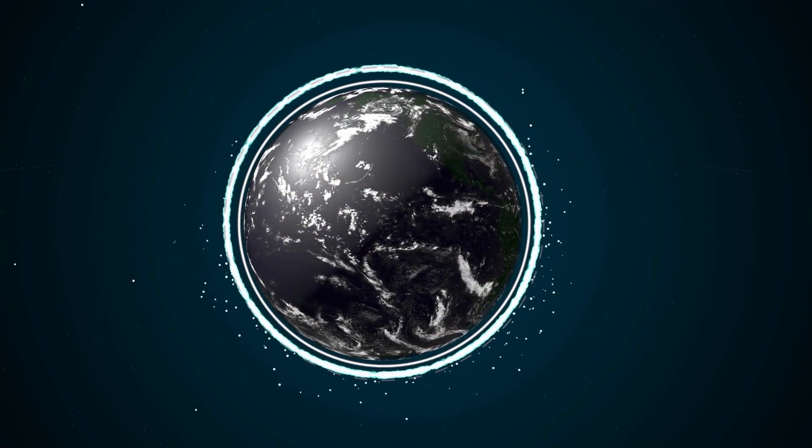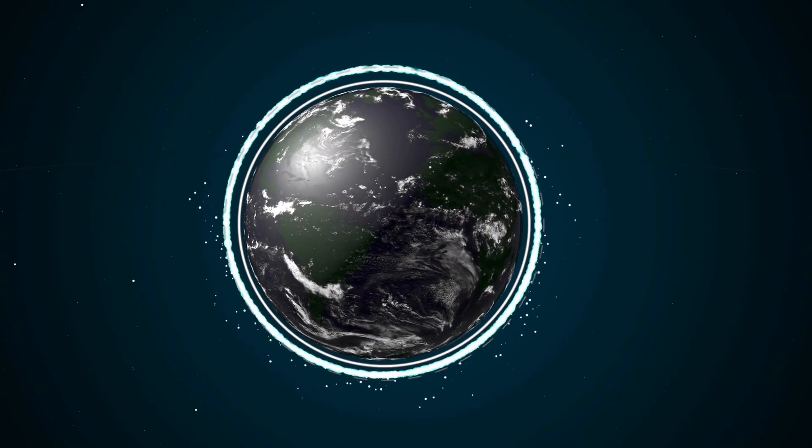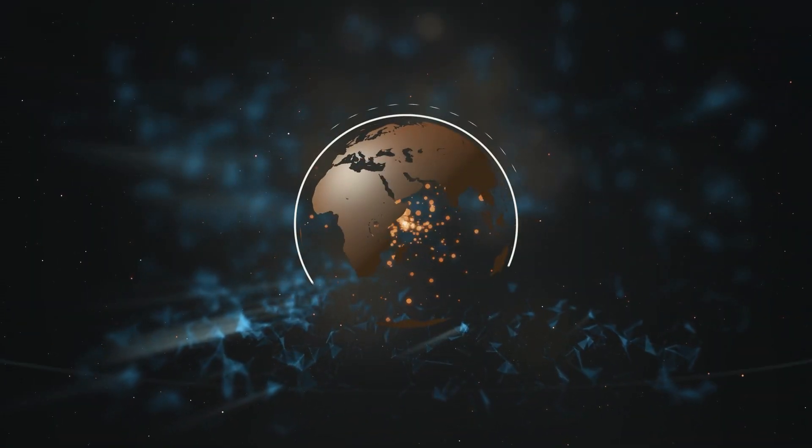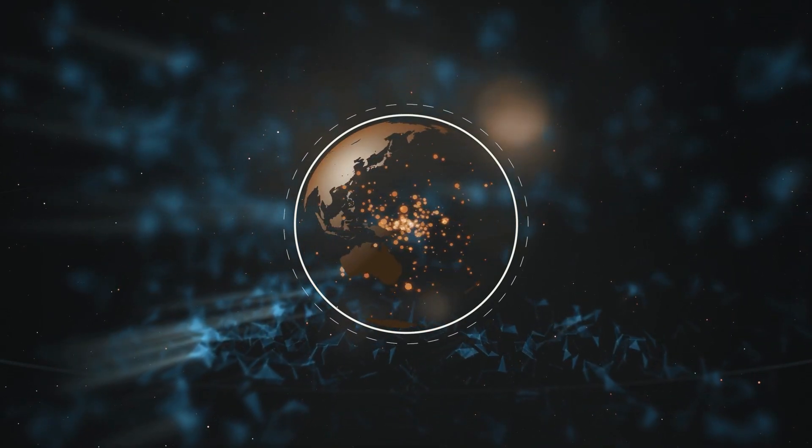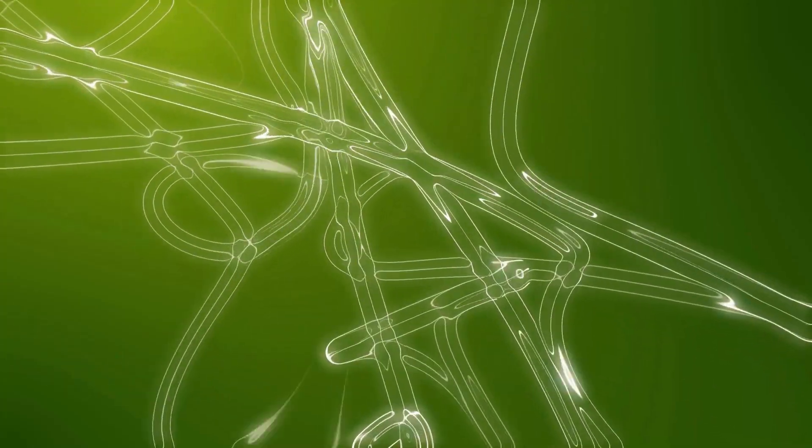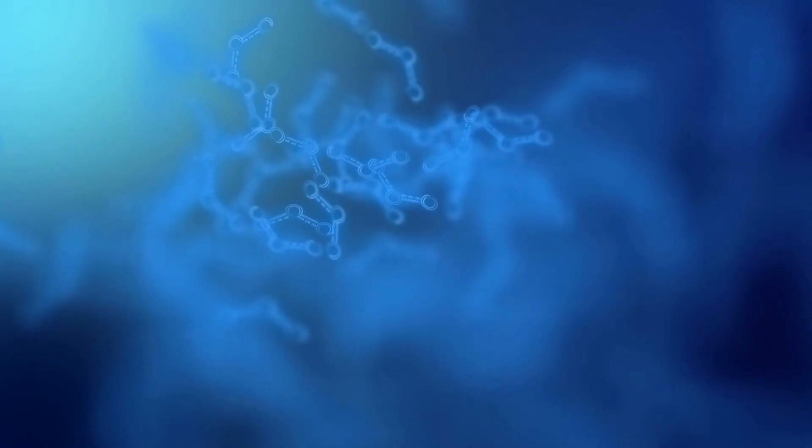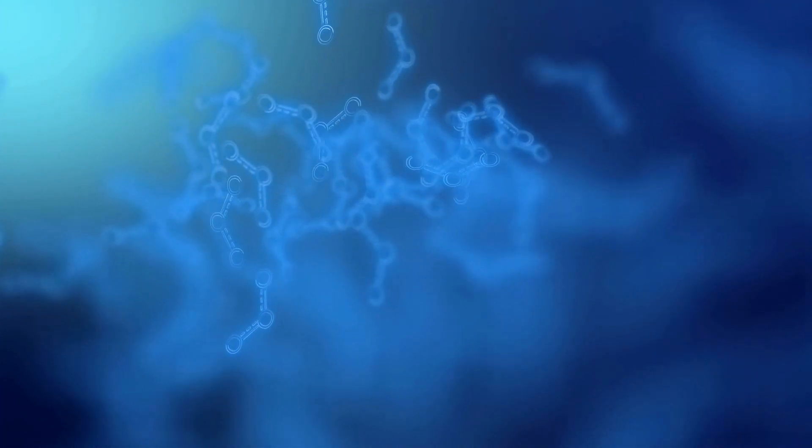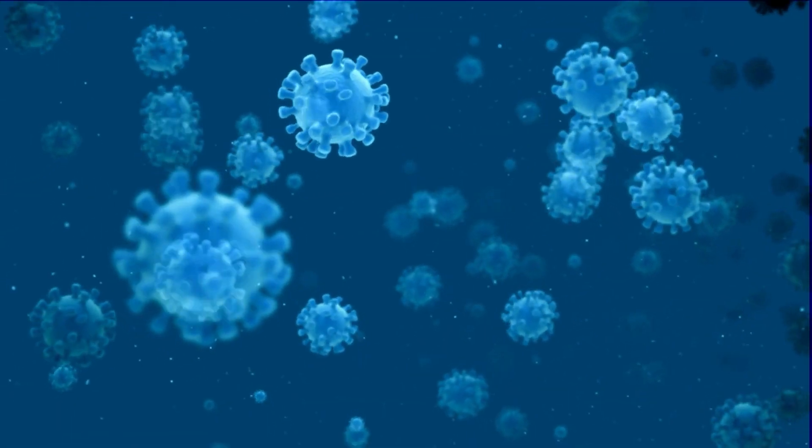Before this event, the atmosphere of Earth was vastly different than it is today. Instead of the mix of gases that we currently have, it was primarily composed of methane, ammonia, and other gases that are toxic to most forms of life as we know it. Oxygen was almost non-existent, but as time passed, a group of microorganisms known as cyanobacteria began to thrive and proliferate. These tiny organisms were capable of performing photosynthesis, a process that produces oxygen as a byproduct.